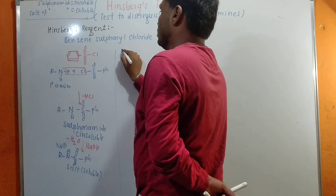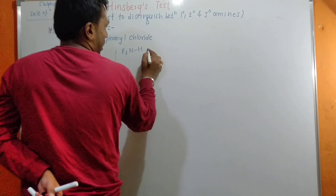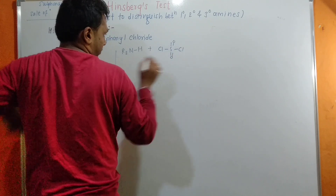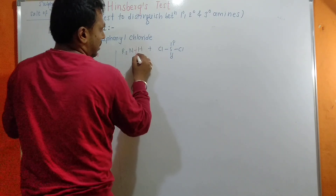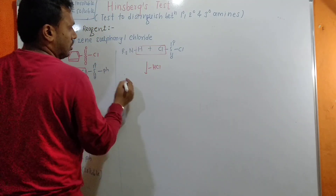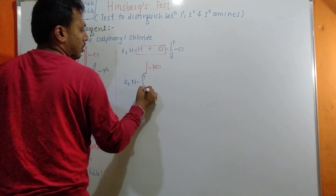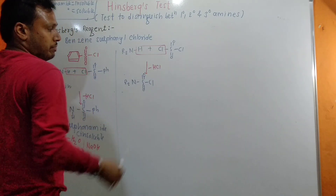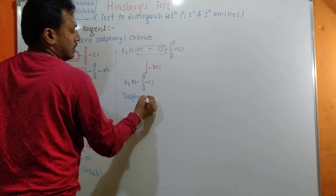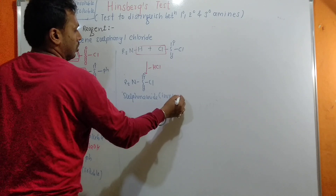For secondary amine, the general representation is R₂NH. Again it reacts with benzene sulfonyl chloride, and the expected side product is HCl. The main product is R₂N-S(=O)₂-Ph — again a sulfonamide, which is insoluble.